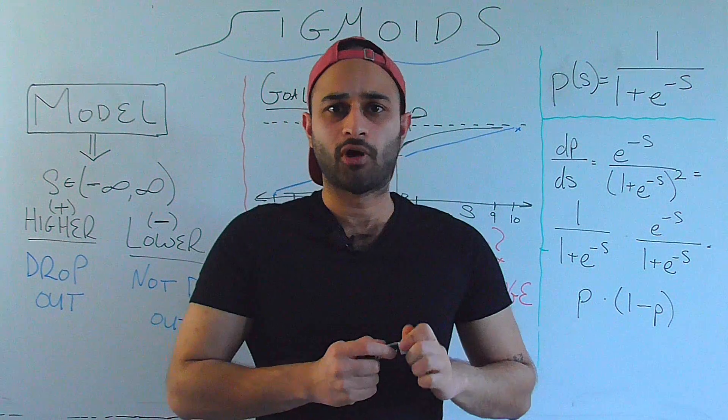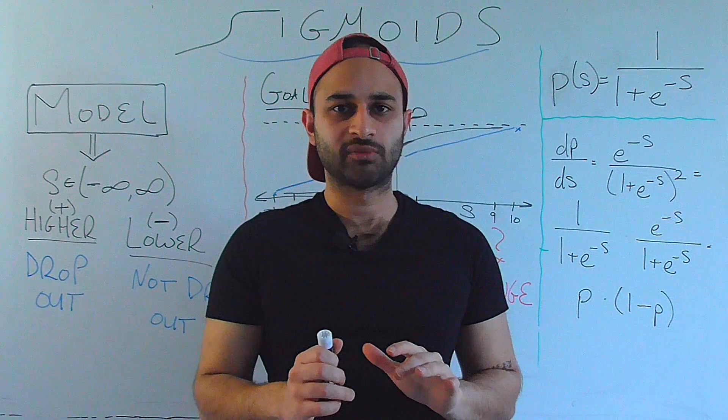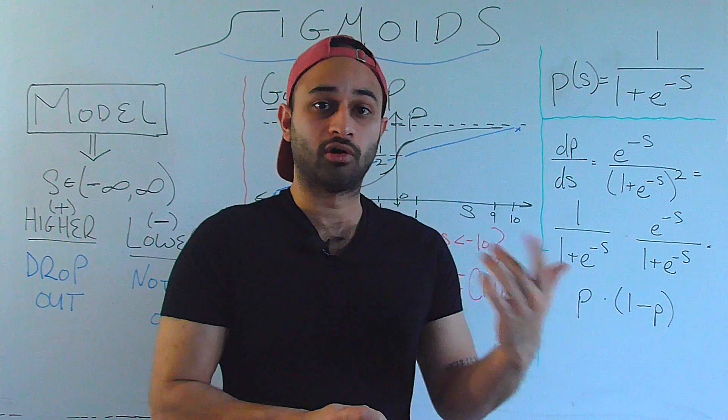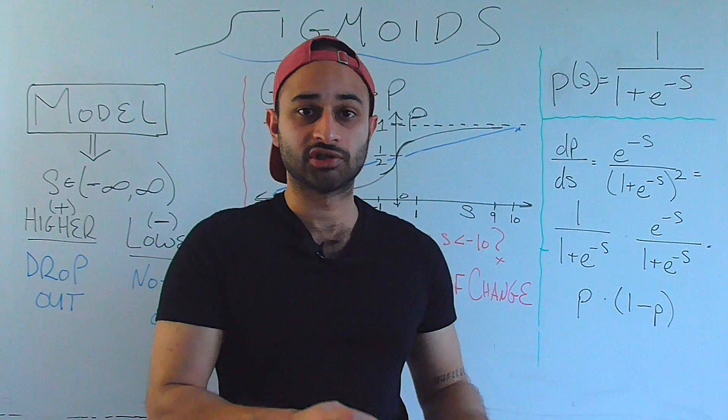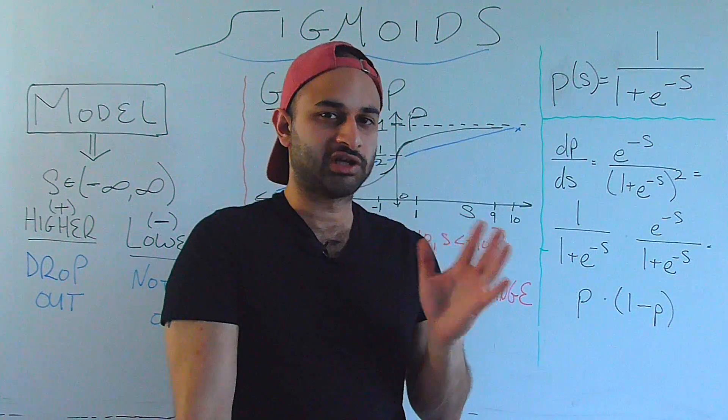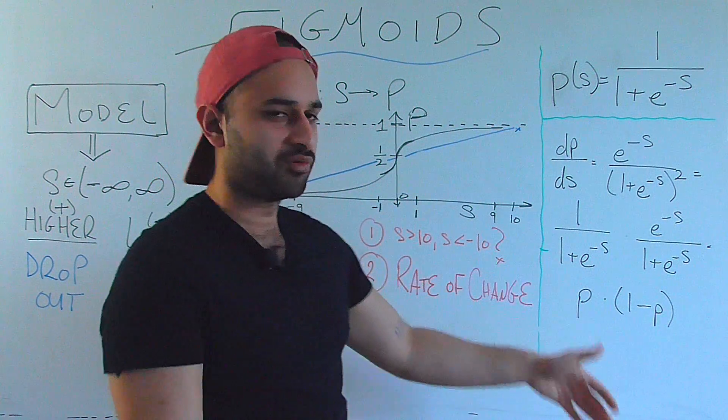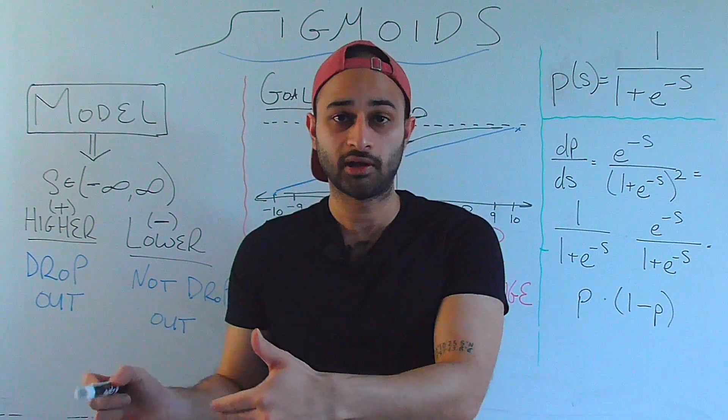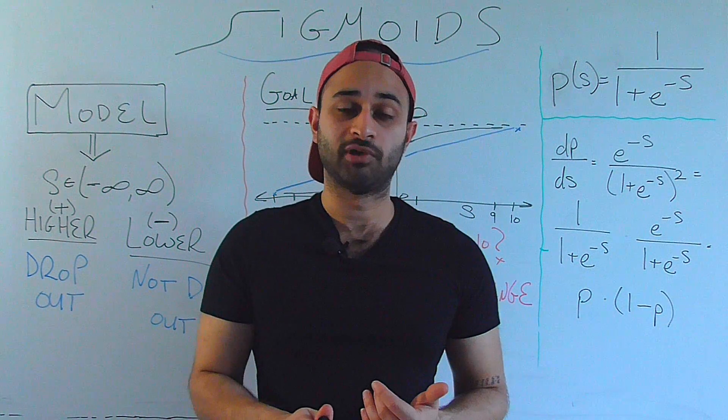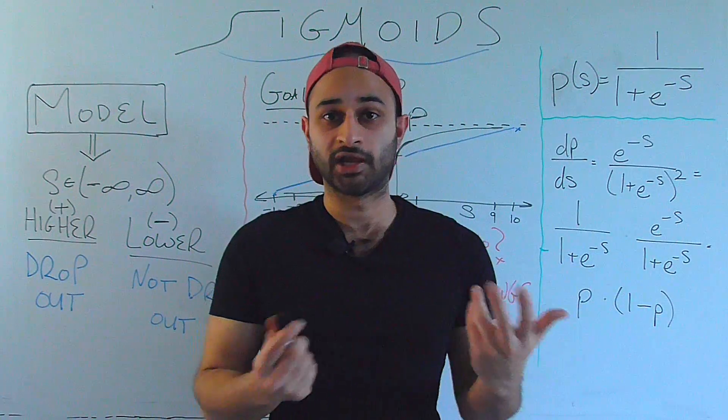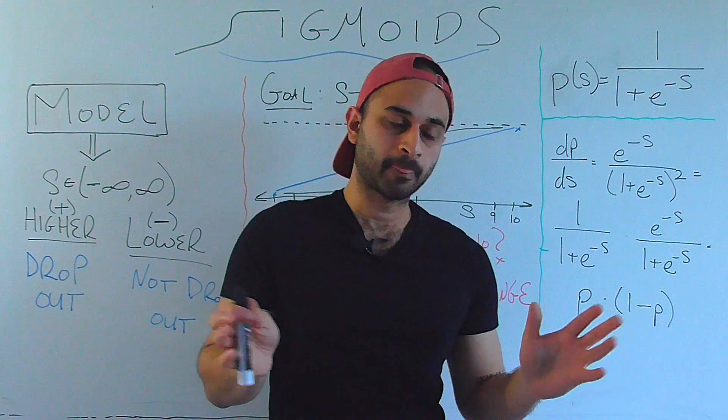Now to just close out this video, I want to touch on the derivative of the sigmoid because it ends up being really, really important for when we look at neural networks, other machine learning applications. And if you're just here just to kind of get an idea of the sigmoid, you can just follow the mathematics. But if you're more trying to get into the heart of machine learning, we care about the derivative of the sigmoid because it's used to calculate loss functions, which basically help us train our machine learning models.